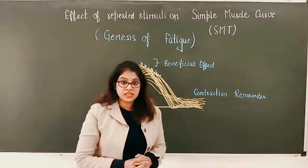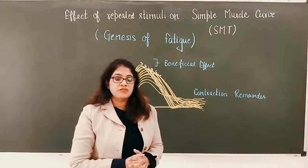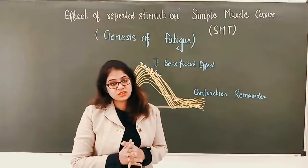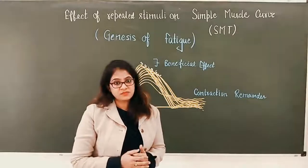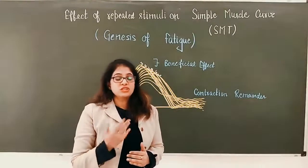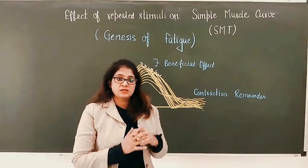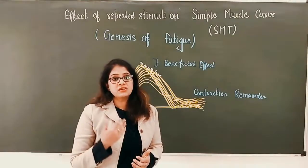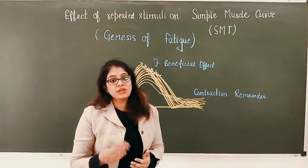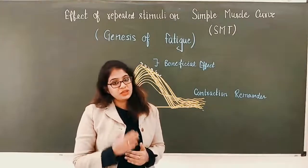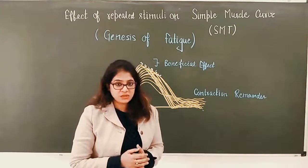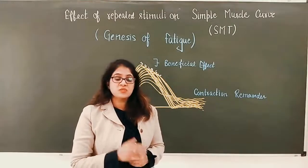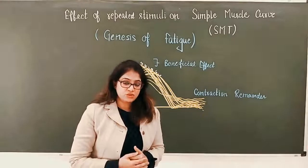Fatigue is the decreasing working capacity of the muscle or cell on repeated contraction. The causes of fatigue include: on repeated stimuli or repeated contraction, there may be decreased nutrient and oxygen supply, depletion of acetylcholine stores, and accumulation of metabolites.